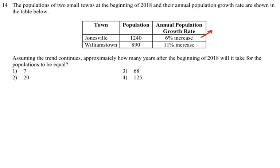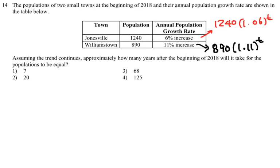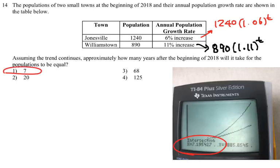Number fourteen: the first account is increasing by 6%, which can be written as 1240 times 1.06 to the t power. The other is 890 times 1.11 to the t power. We're looking for when they're equal to each other, so I sketched both graphs and found the intersection. The intersection happens when x is around 7 or 7.1, so the answer is choice 1 — 7 years.